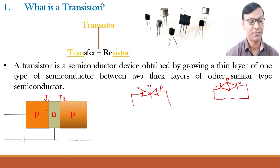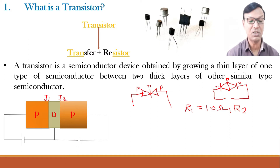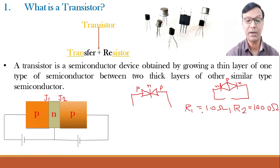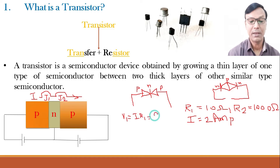Let us assume that R1 of J1, as it is forward biased, is very low — say 10 ohms. And this junction J2 is reverse biased. You are connecting P to the N side, which means this junction J2 is a reverse biased junction. A reverse biased junction does not allow any current to flow — it is having very, very heavy resistance. Say this resistance is 1000 ohms. Now I am passing some current I from J1 to J2. Let us assume this I is 2 amperes. What will be the voltage at junction J1? V1 is equal to I into R1 — by Ohm's law — 2 amperes into 10 ohms, which is equal to 20 volts.